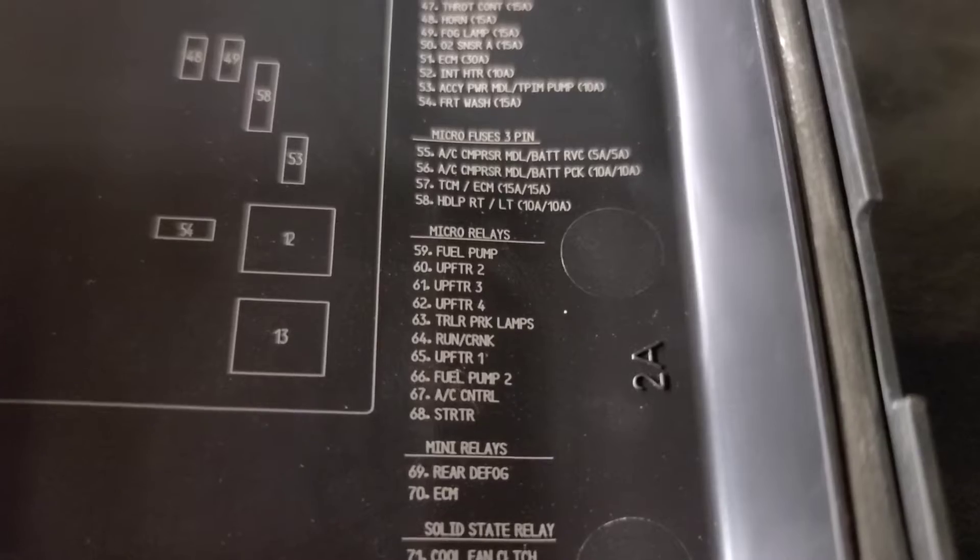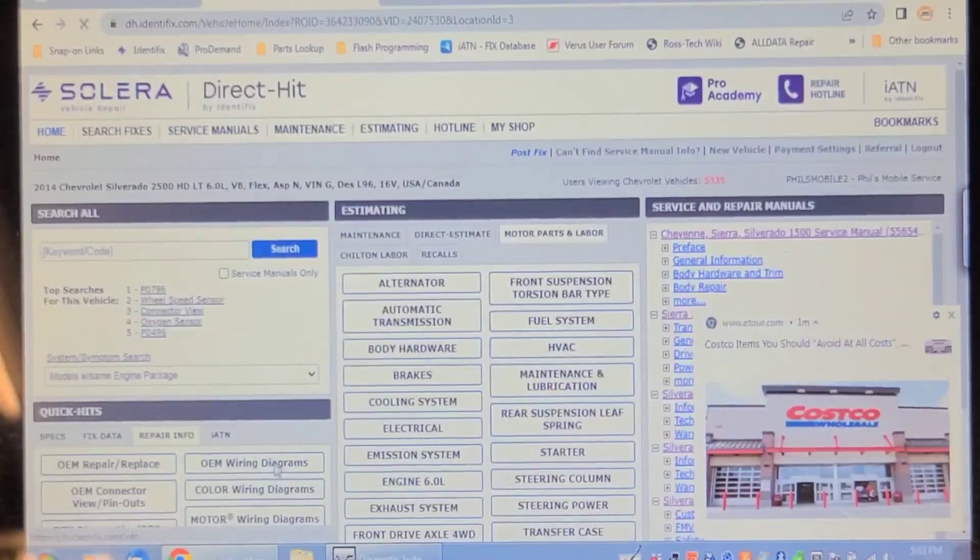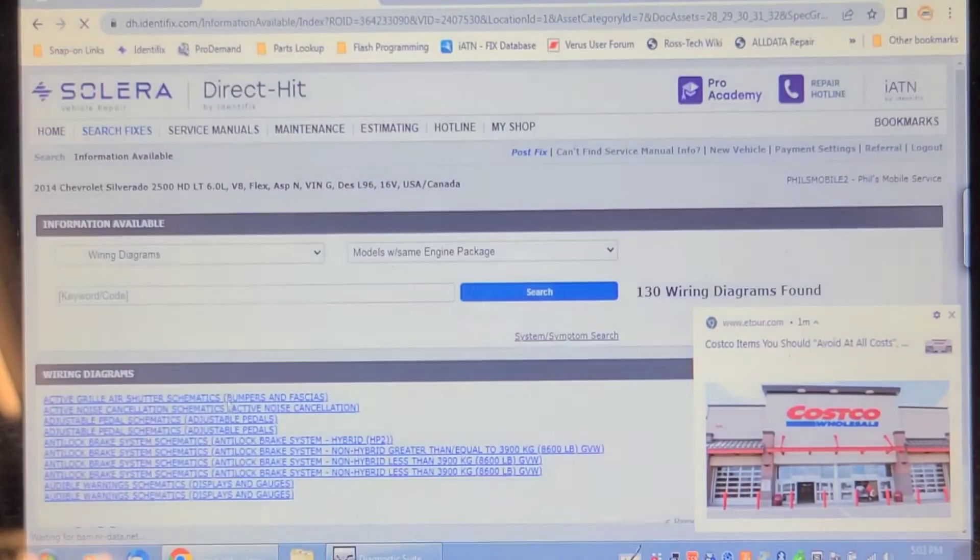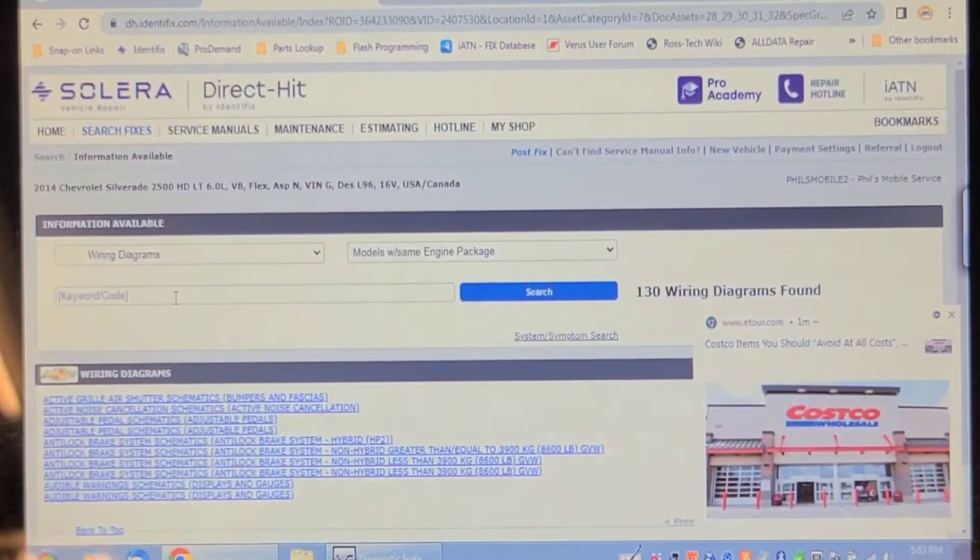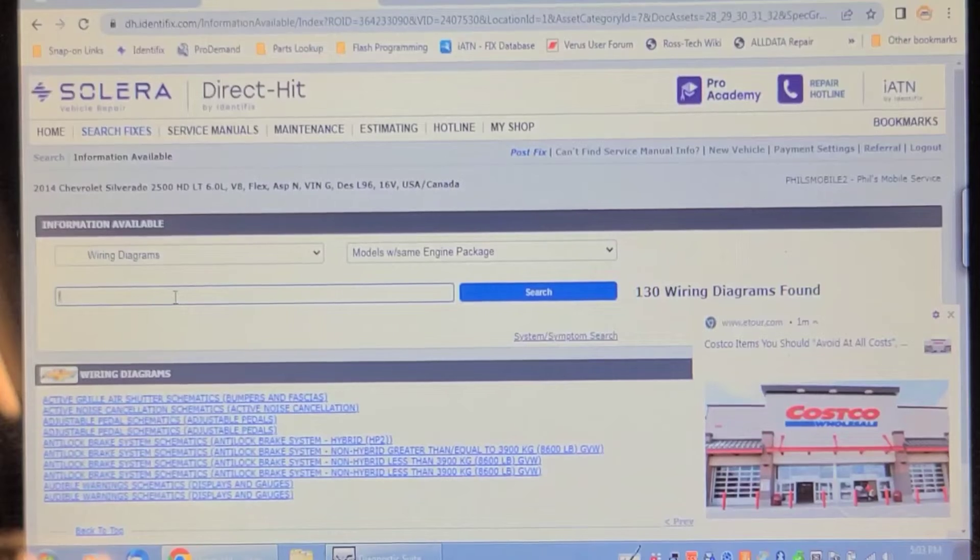That is fuel pump relay number 66. So let's look at the circuit. Going into OEM wiring diagrams, I'm typing in fuel pump and search.